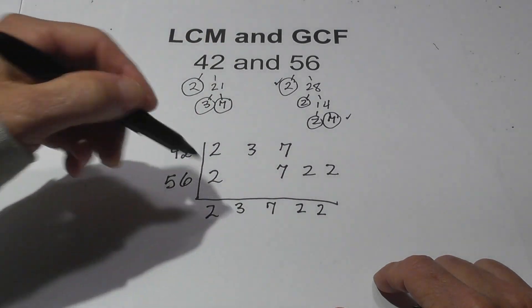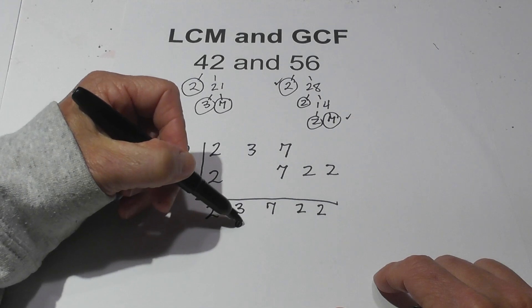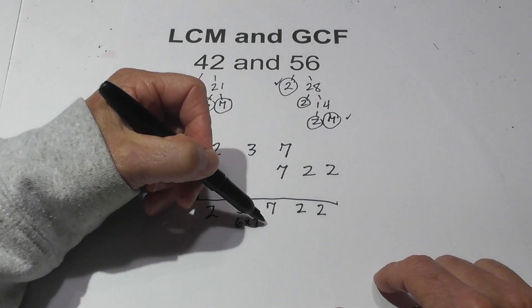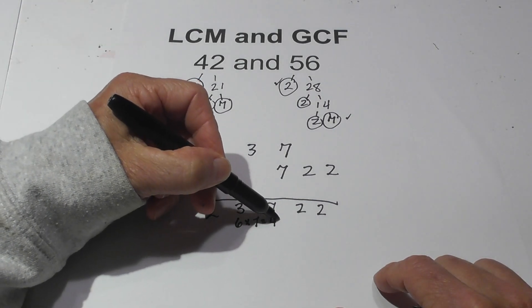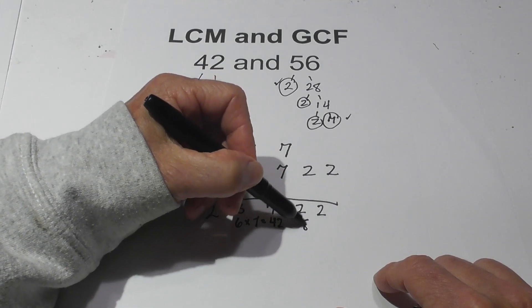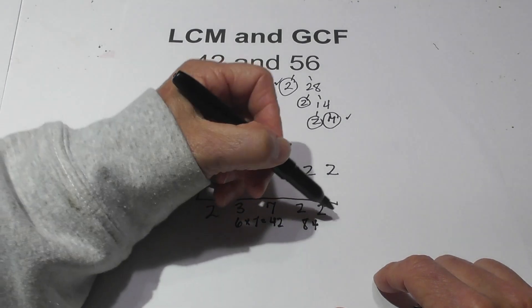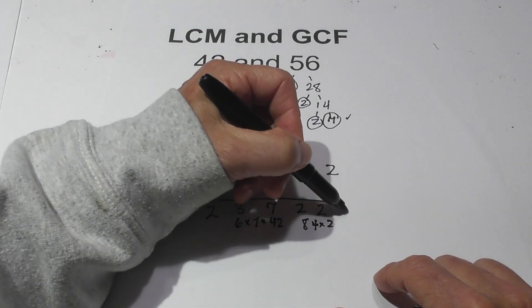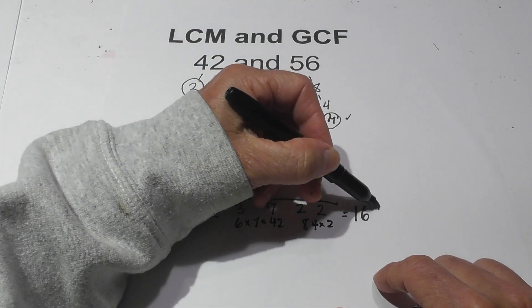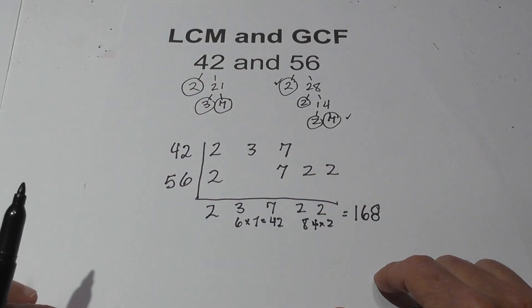Now all you do is multiply these together. 2 times 3 is 6. 6 times 7 is 42. 42 times 2 is 84. And 84 times 2 equals 168 is the LCM.